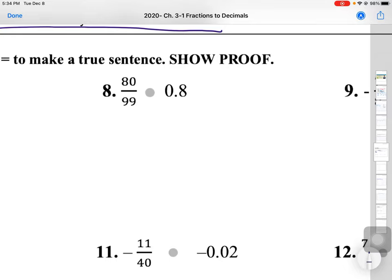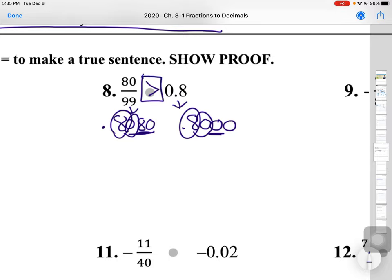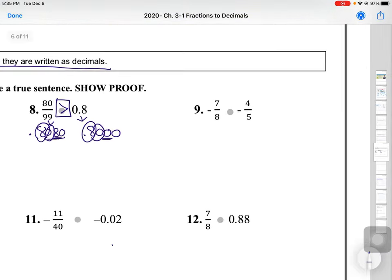Number 8, 80 and 99ths in your calculators, please. You should have gotten 0.8080 for that. And this is already in that form, but because this has four spots, I'm going to add the other three spots. So, the 8's are the same. The 0's are the same. But this 8 is bigger than this 0. So, I come back up here and put in my greater than sign. 80/99ths is greater than 0.8 or 8 tenths.